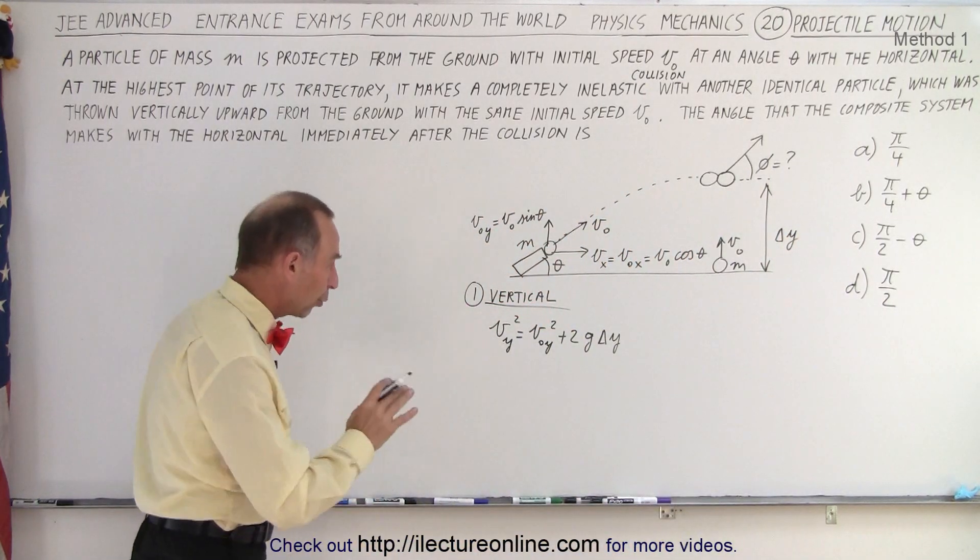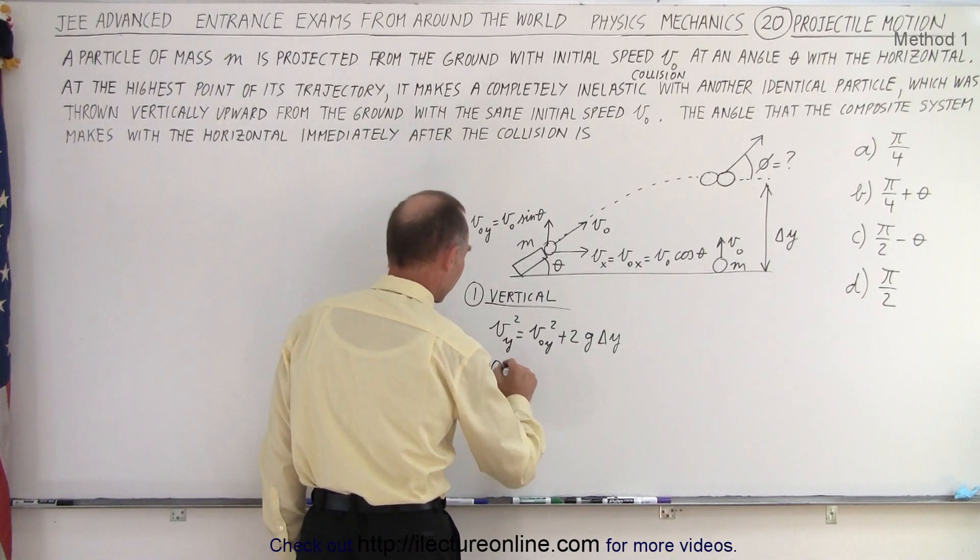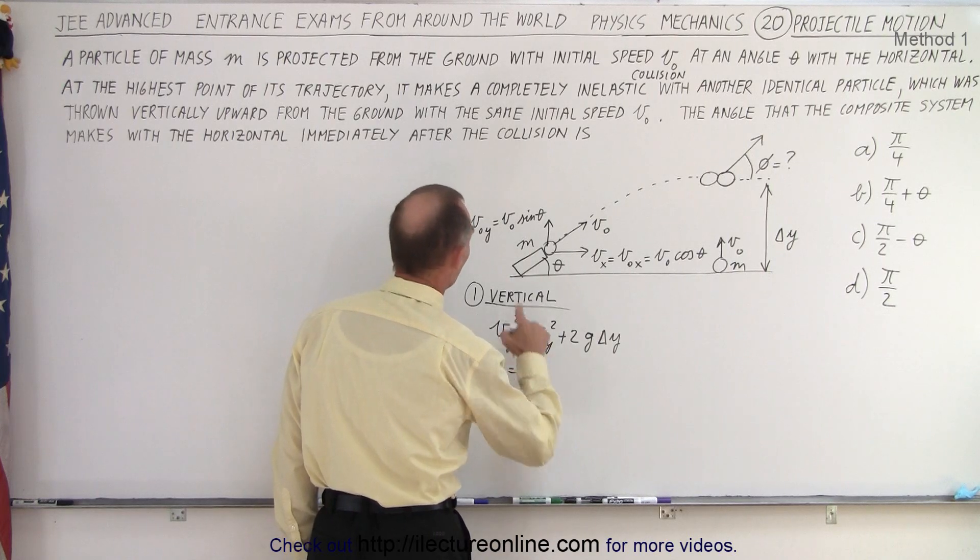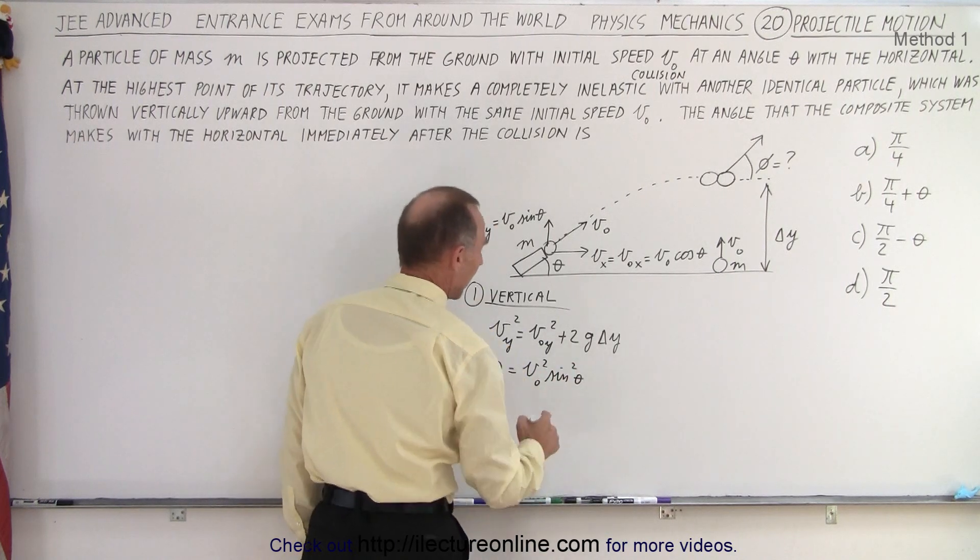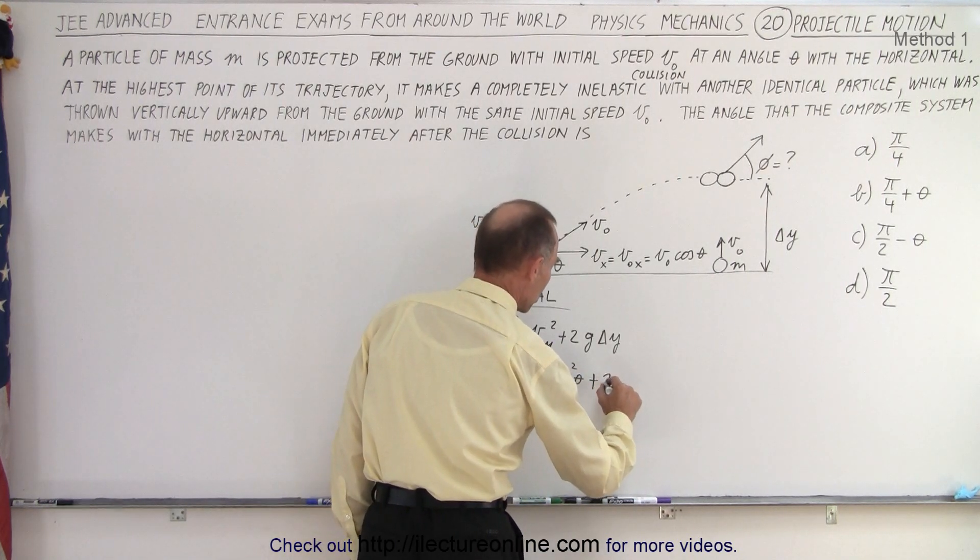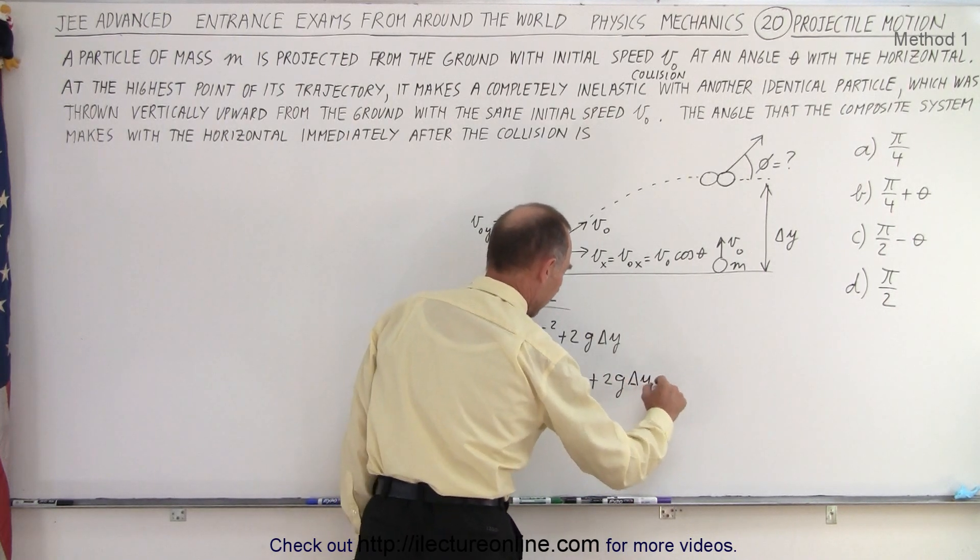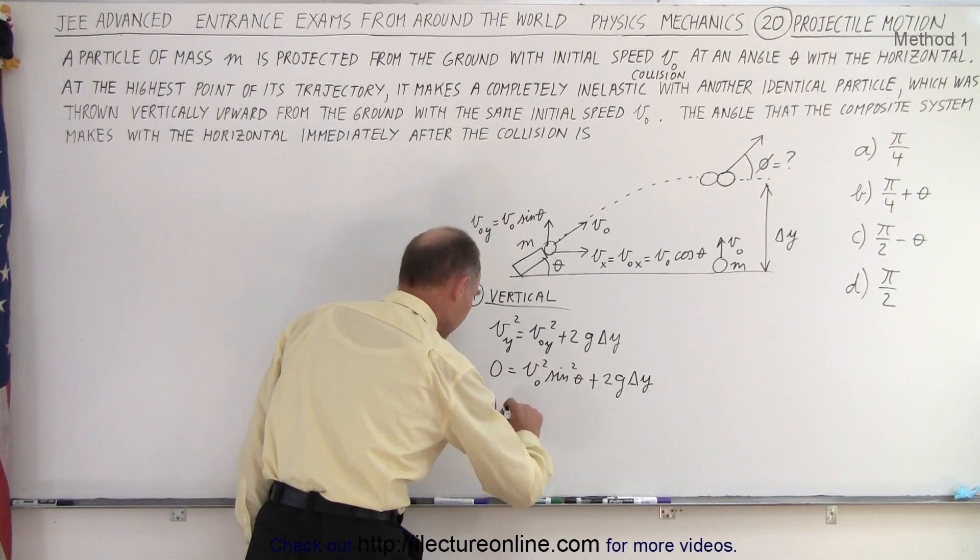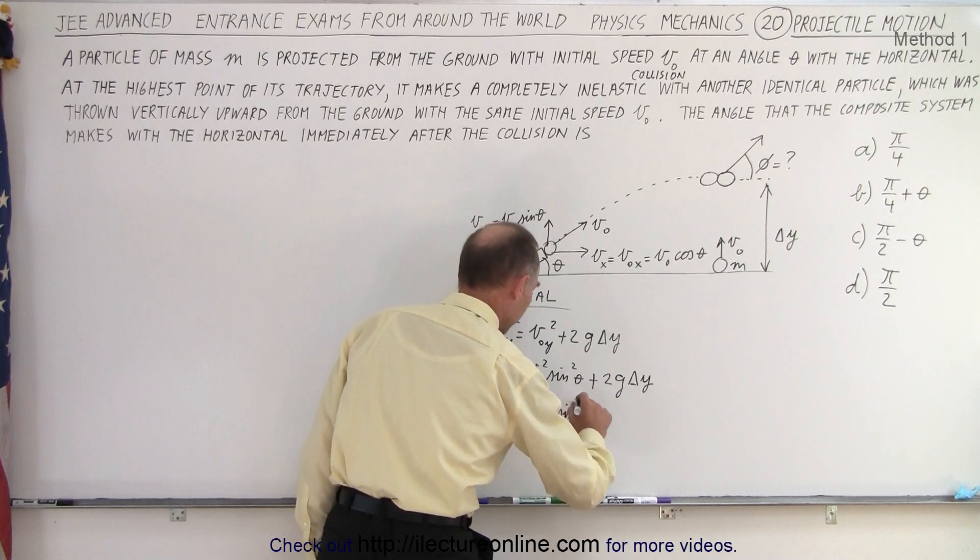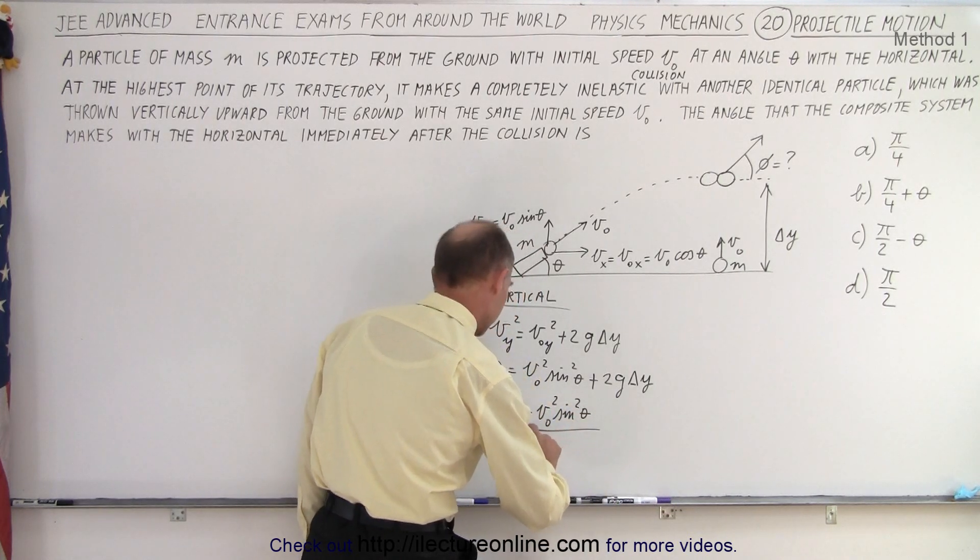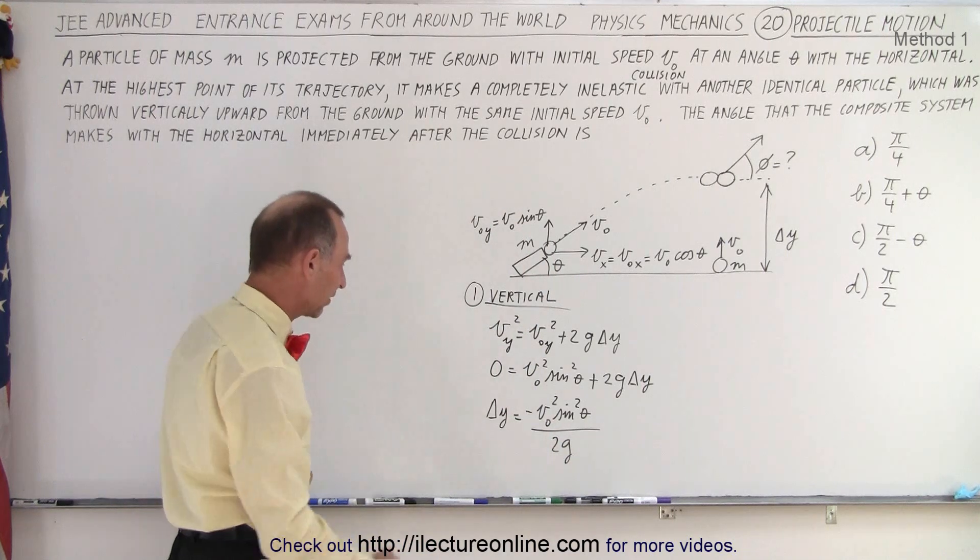So we're going to solve that equation for delta y because we realize that our final velocity is equal to 0. So we can write 0 is equal to my initial velocity squared, which is v initial squared times the sine squared of theta. And then this would be plus 2g times delta y. And so if we solve this for delta y, we get delta y is equal to minus v initial squared sine squared of theta divided by 2g. Remember that g is equal to negative 9.8 so the negatives cancel.